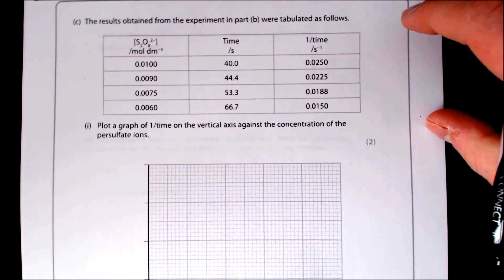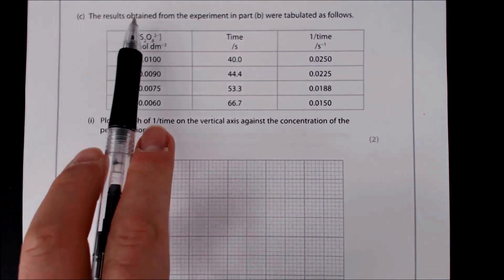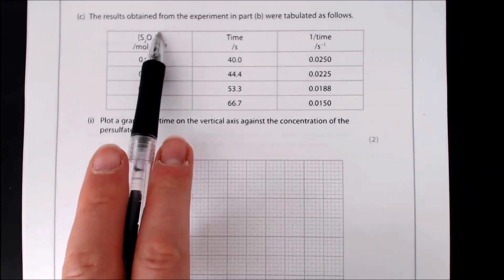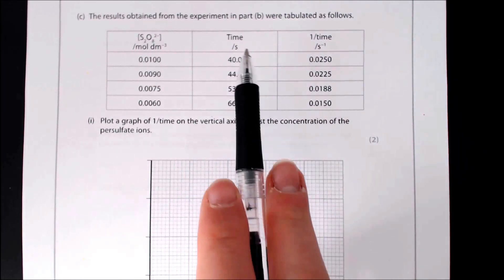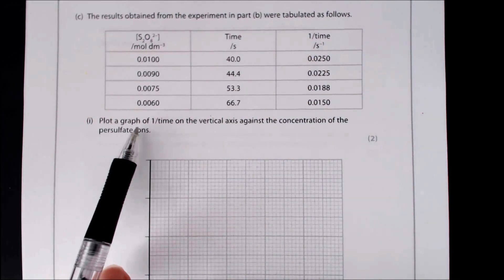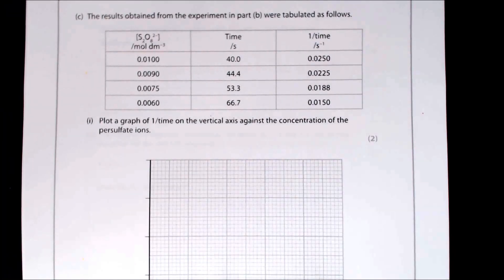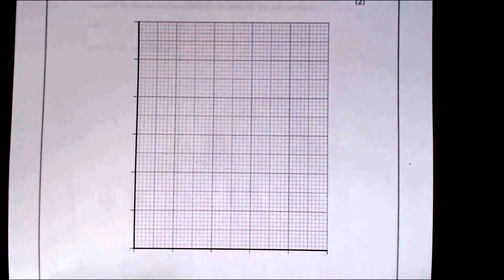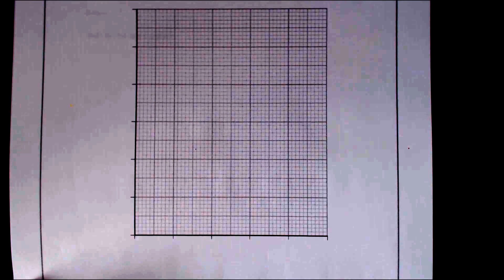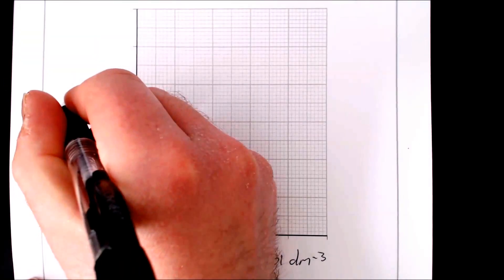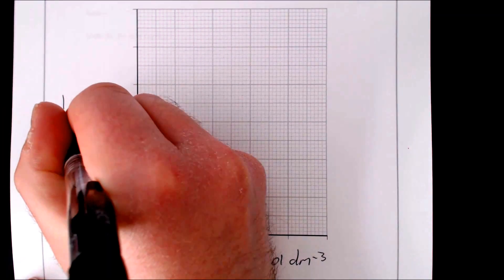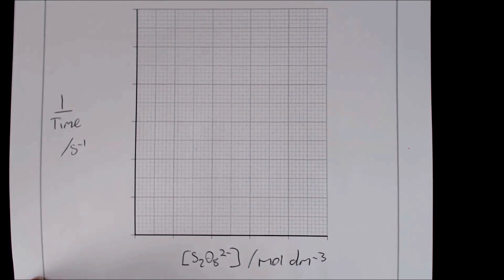The results table shows the concentration of persulfate ions, the time for colour change, and 1/time (as a measure of initial rate). The task is to plot a graph of 1/time on the vertical axis against the concentration of persulfate ions on the horizontal axis. The vertical axis unit is s⁻¹ and the horizontal axis unit is mol dm⁻³.